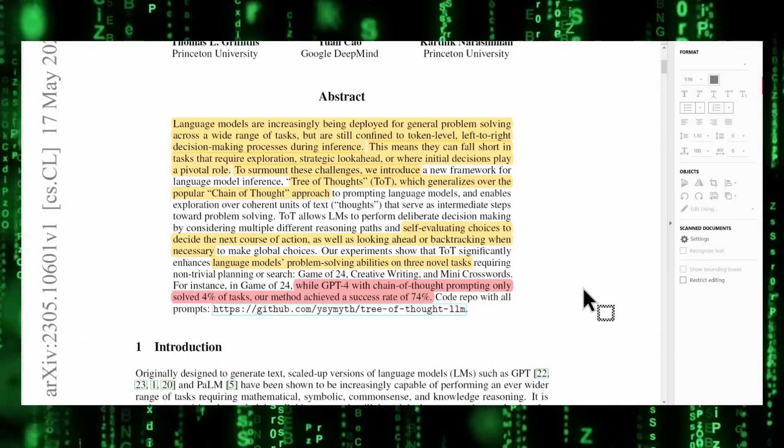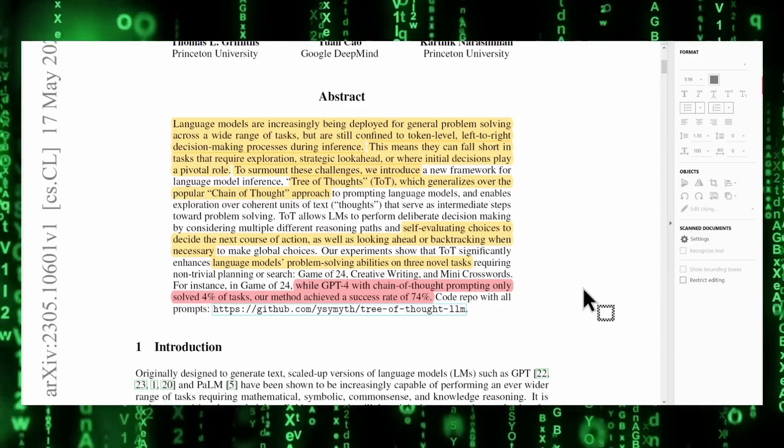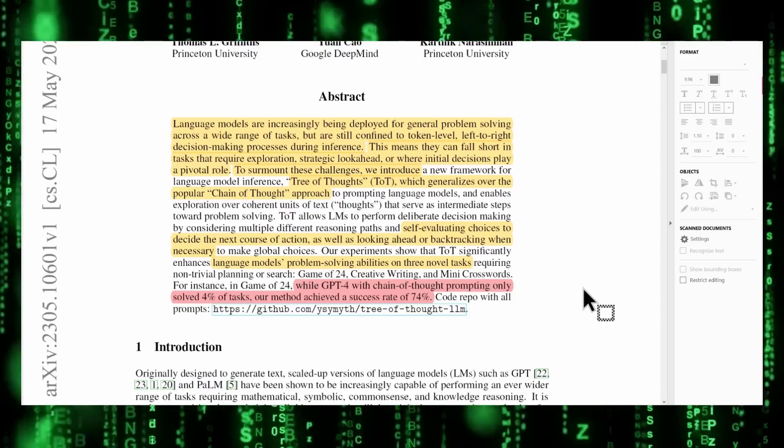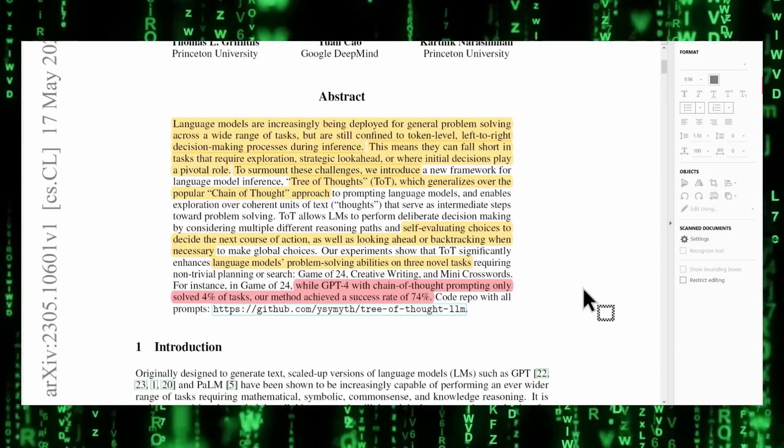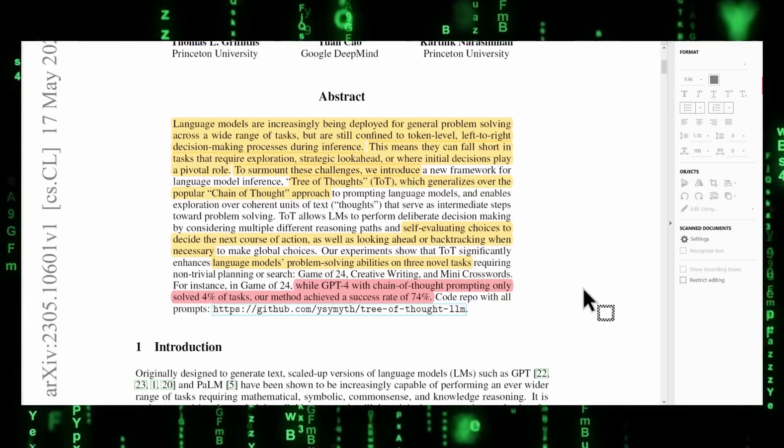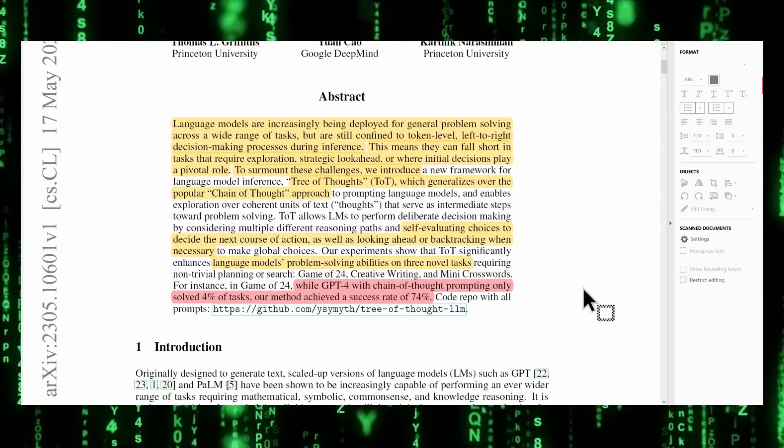To surmount these challenges, we introduce Tree of Thoughts, which generalizes over the popular Chain of Thoughts approach. This allows the LM models self-evaluating choices to decide the next course of action, as well as looking ahead or backtracking when necessary to make global choices. And this significantly improves language models' problem-solving abilities on three tests that these researchers will test them on.